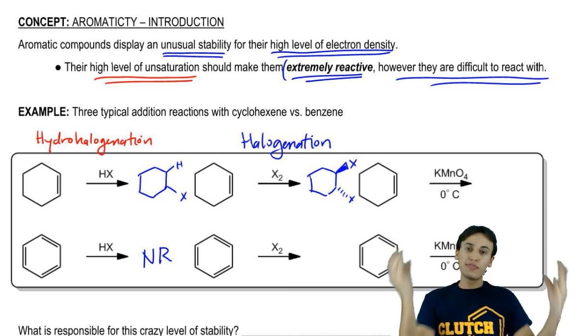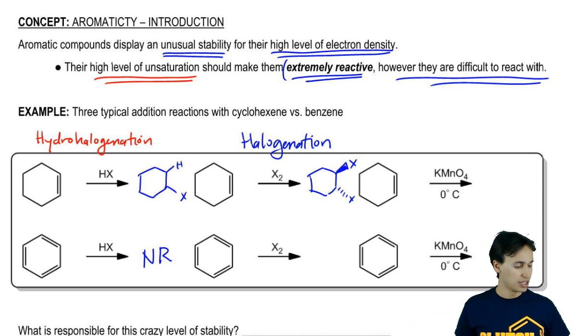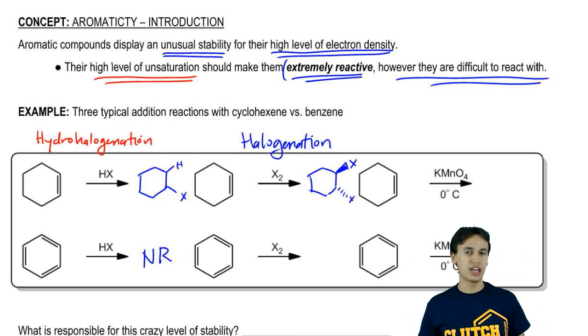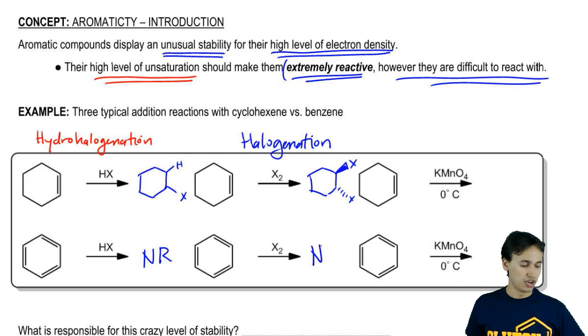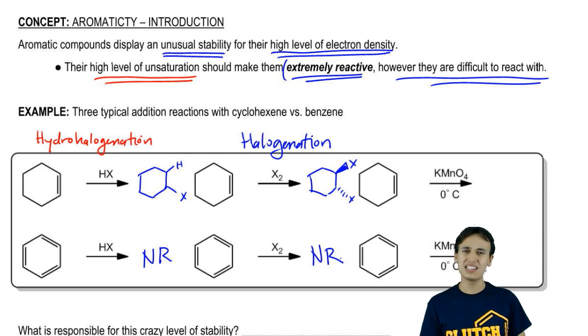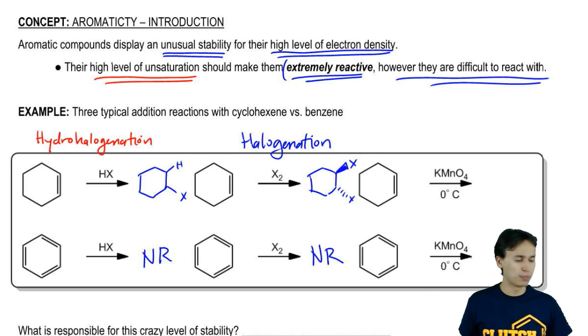You might think that you're going to get X's everywhere on every single carbon. But in fact, the answer again remains no reaction. Why is that? These double bonds look like they should be reacting. Why are they not reacting? It's so confusing. Let's look at another example.